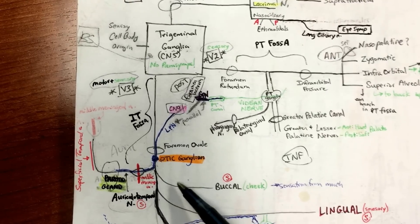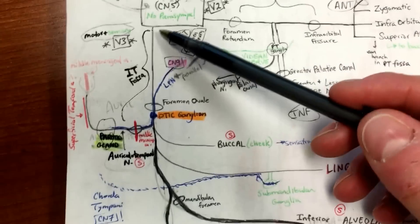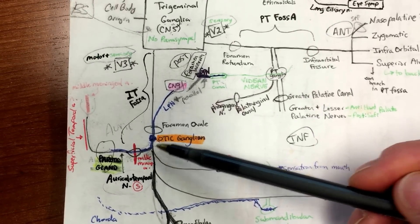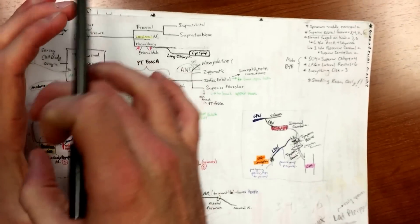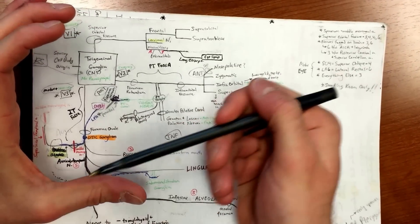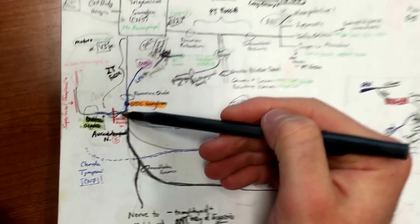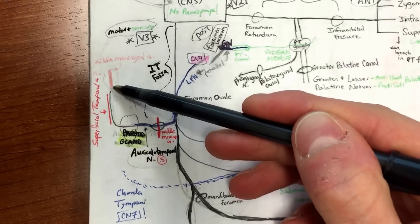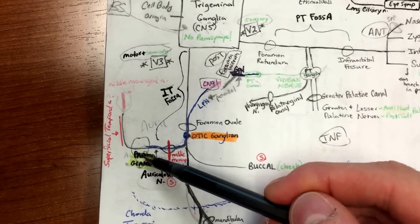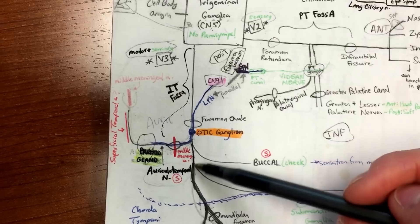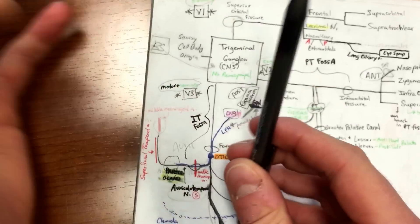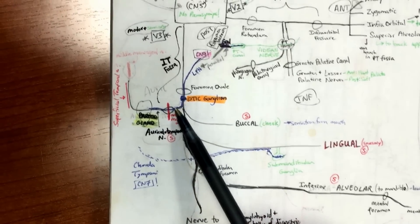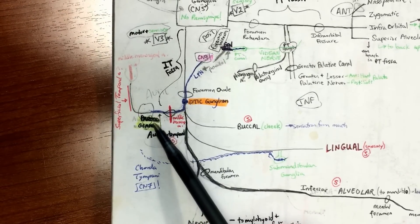Moving on — lesser petrosal is going to hit up the parotid gland. V3 goes down and one of the branches it gives off is the auriculotemporal nerve. Big picture: if you have your face with your ears over there, you swing back and then go up the ear. As you're swinging back, you're hitting the parotid gland. An important relationship to remember: the middle meningeal artery goes up through the split of the auriculotemporal nerve, and lesser petrosal can hop onto auriculotemporal to hit the parotid gland and innervate the parasympathetics there.